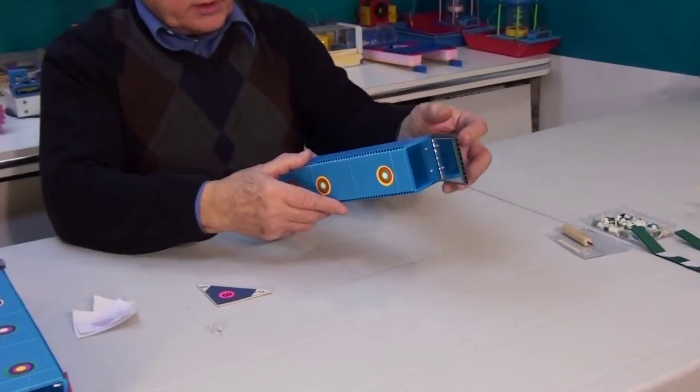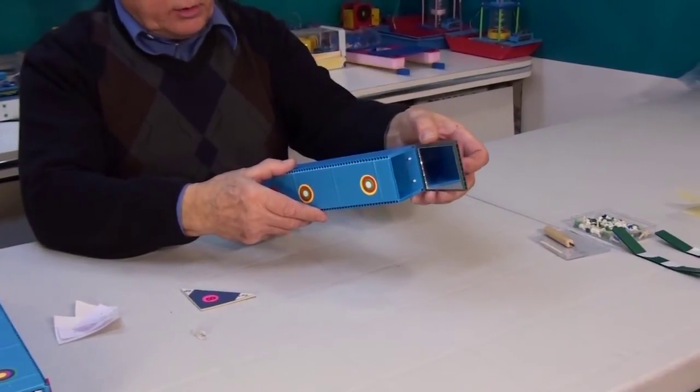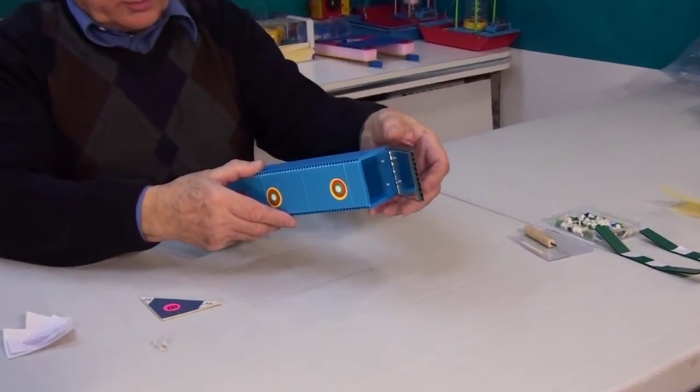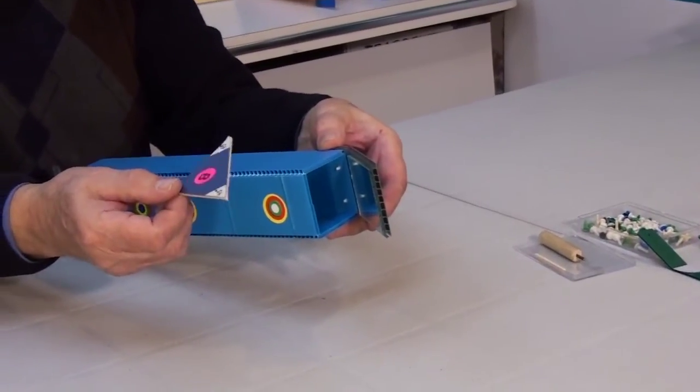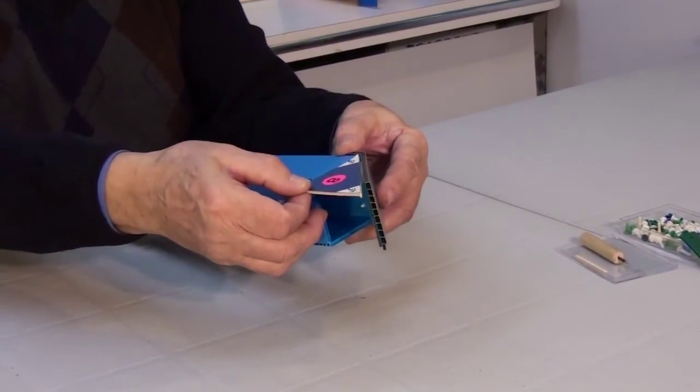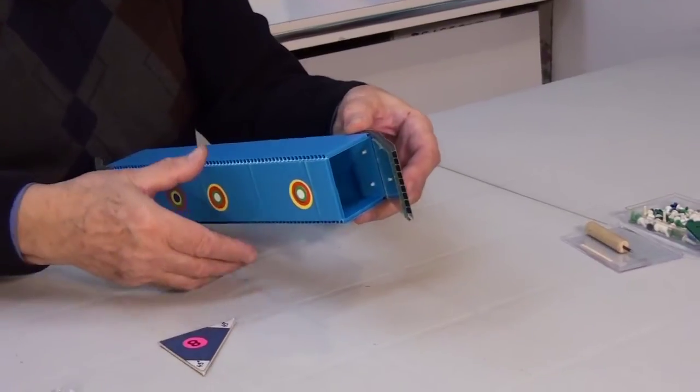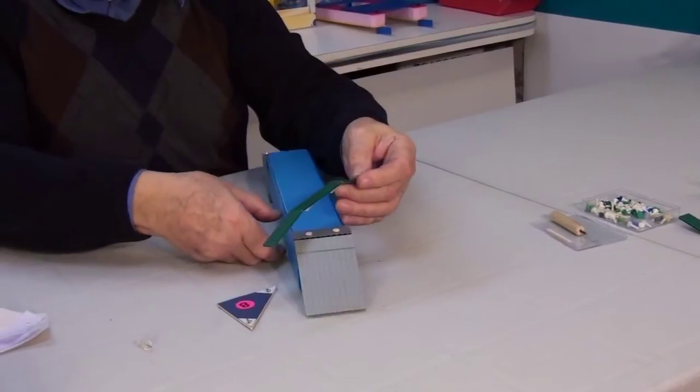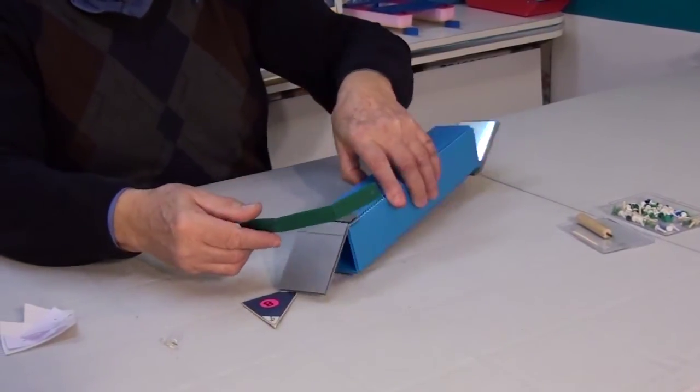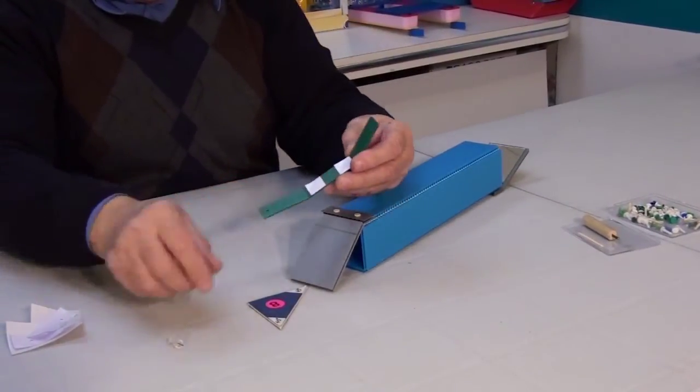Now we will secure our mirrors at a certain angle. This angle has to be 45 degrees. We have a former which will help us to establish the necessary 45 degree angle. But before that we will attach these straps. They are going to be attached on the outside of the line on the mirror plate.